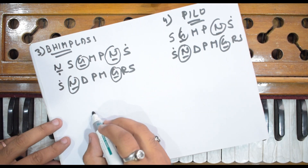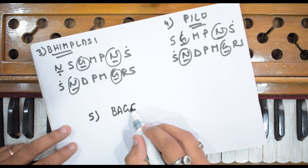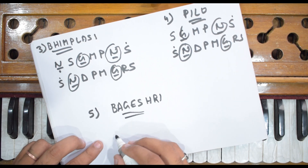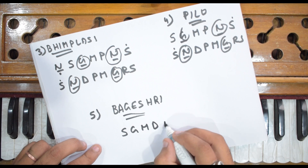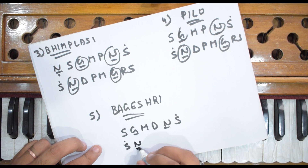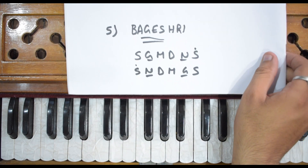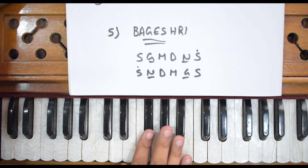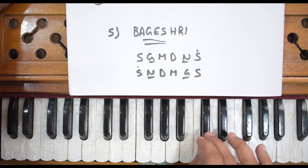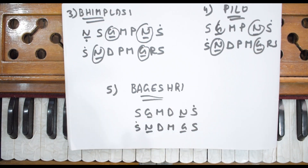Our next main raag is Raag Bhageshri. This raag's aroha is: Sa, Ga, Ma, Dha, Ni, Sa. And the avaroha is: Sa, Ni, Dha, Ma, Ga, Sa. This is Raag Bhageshri, and these are the 5 main raags from Thaat Kafi.